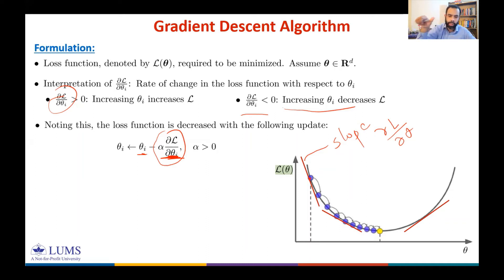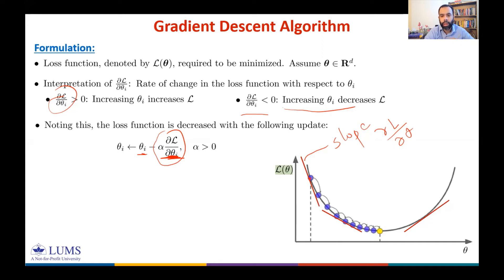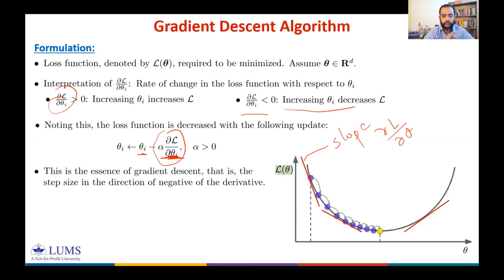If you start from the right side of the minimum, the slope is positive and you want to reduce θ — move toward the left. When ∂L/∂θ is positive, the next θ is less than the previous θ, so you move left. This is the essence of gradient descent: taking steps in the direction of the negative gradient — the direction of steepest descent.